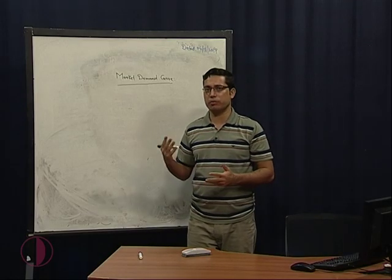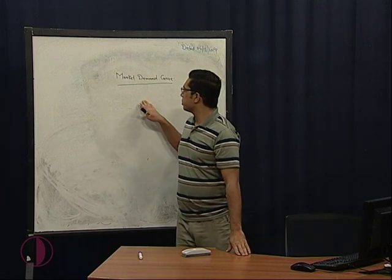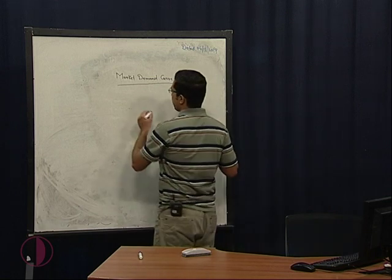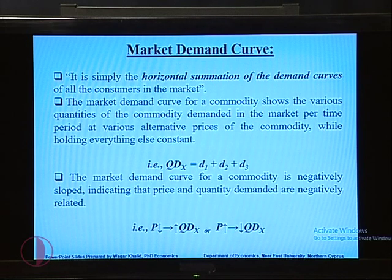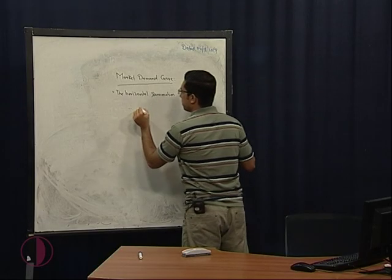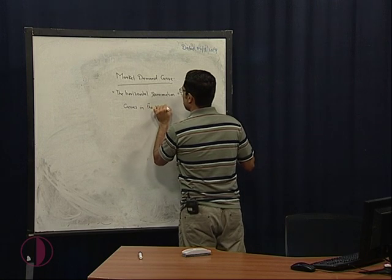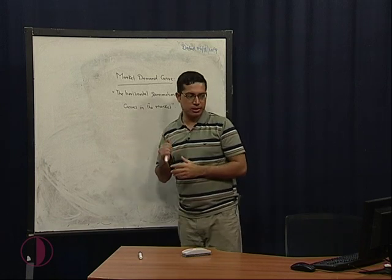Hello, dear students. In the last lecture, we discussed about an individual demand for a particular commodity. In this lecture, we will be talking about the market demand curve. The market demand curve is actually the horizontal summation of all demand curves in the market.